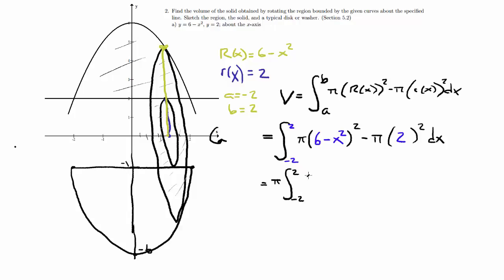That's going to equal pi, negative 2 to 2. I have to FOIL this out, the 36 minus 12x squared plus x to the 4th minus 4. I'm going to simplify that, so negative 2 to 2. It's going to be 32 minus 12x squared plus x to the 4th dx.